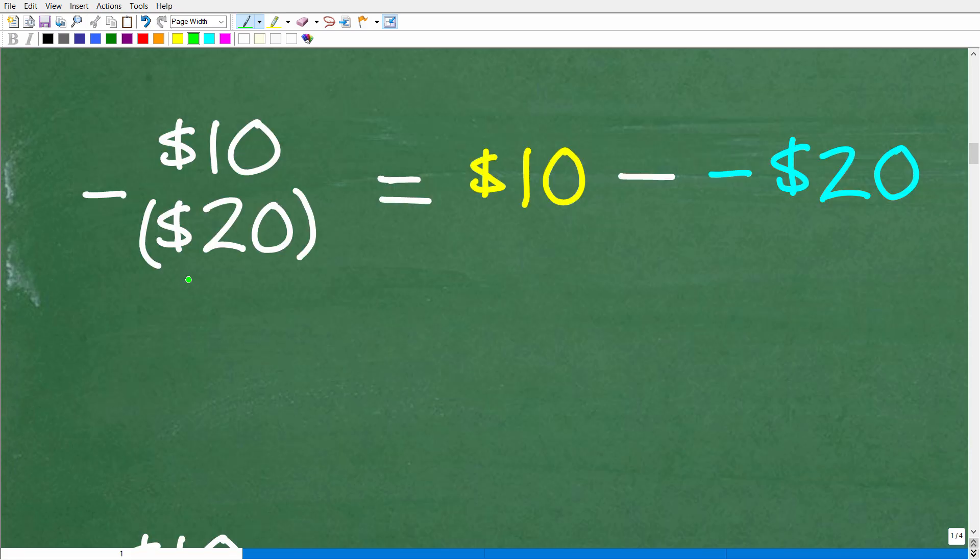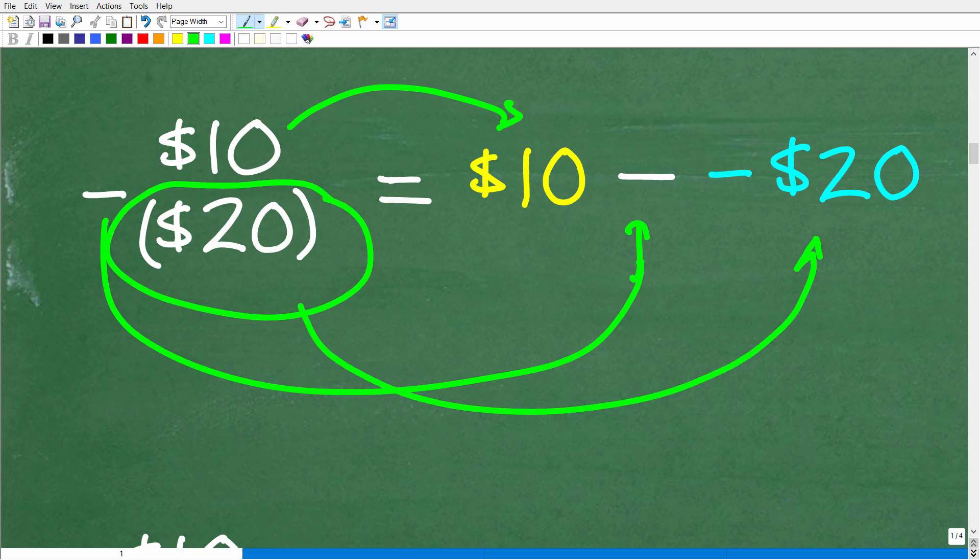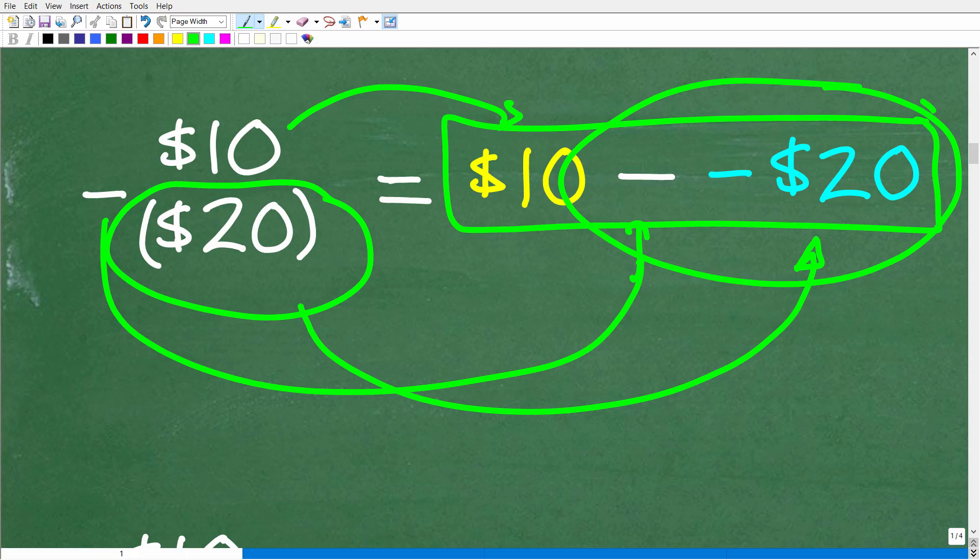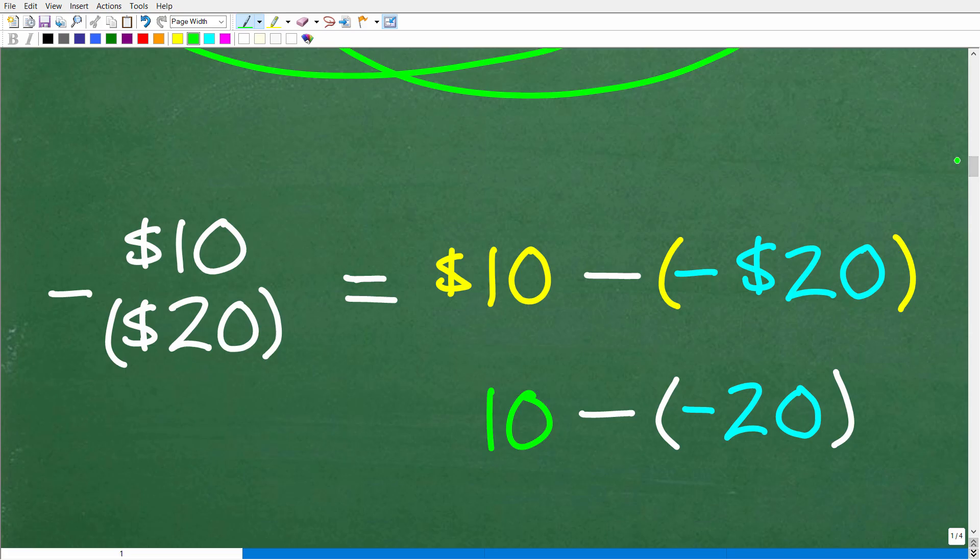Okay, so $10 minus $20 in parentheses is the same thing as $10 minus, right? So we still have this minus right here, but this $20 in parentheses is a negative $20. So here is what we have to figure out. So $10 minus a minus $20. Now this right here, this minus of a minus can be confusing. So we want to write this a little bit better from a mathematical standpoint. So we'll put parentheses around this negative value.